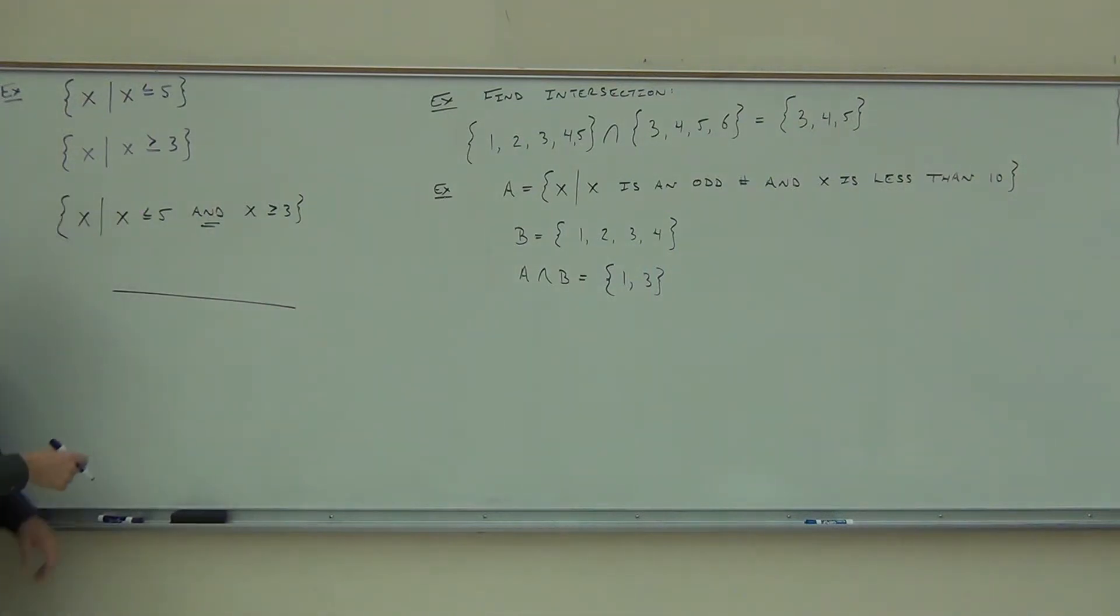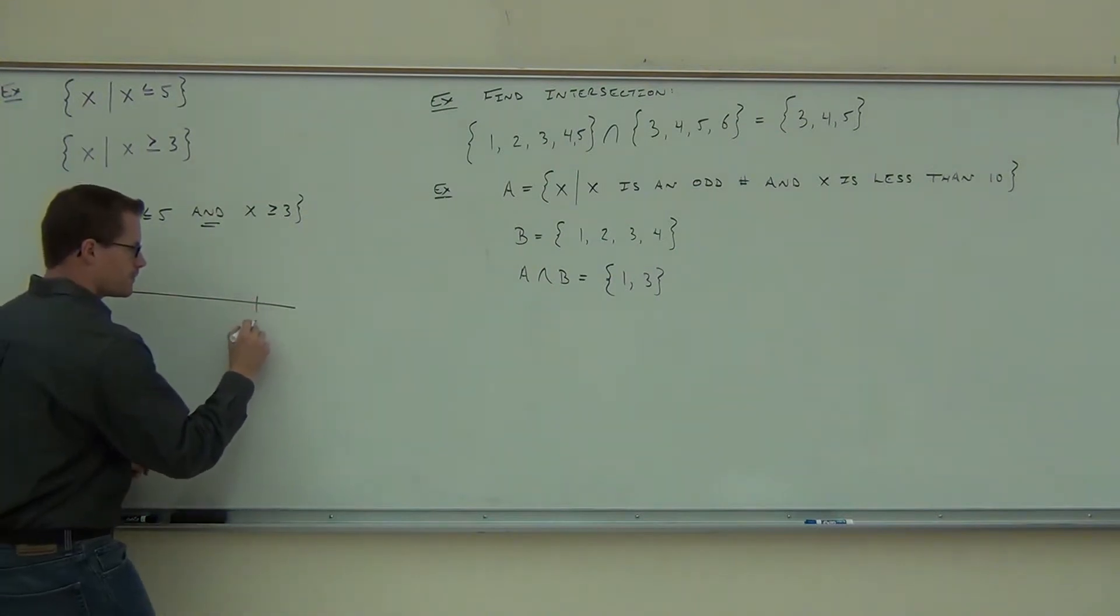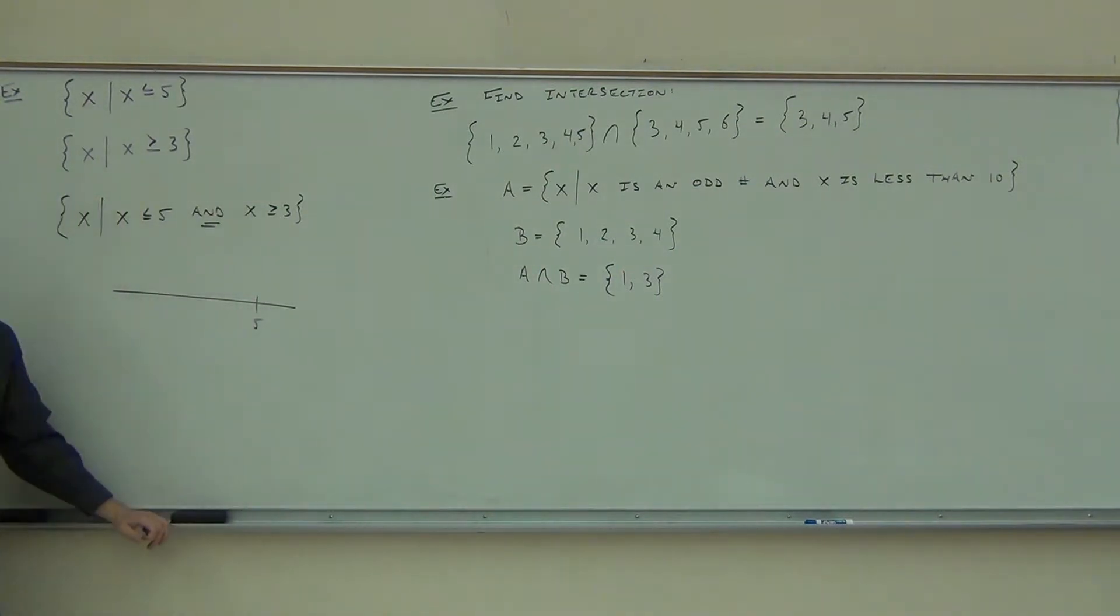Inequalities are simply graphed on a number line. So let's look at this. If we have x is less than 5, what does x is less than 5 represent?